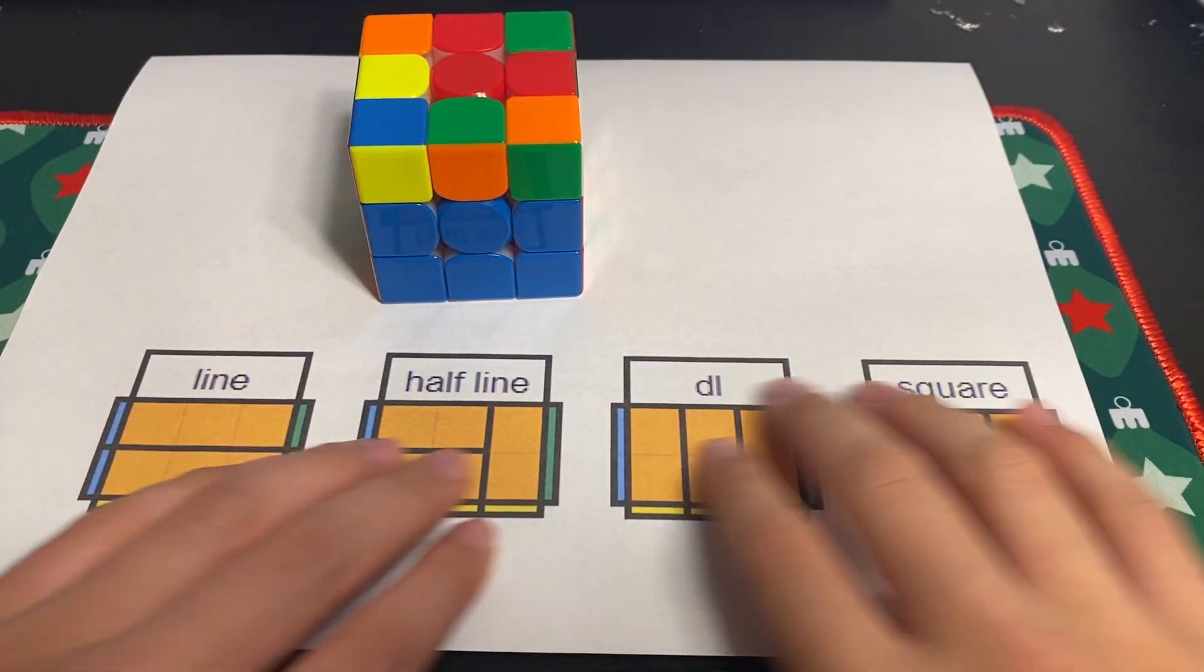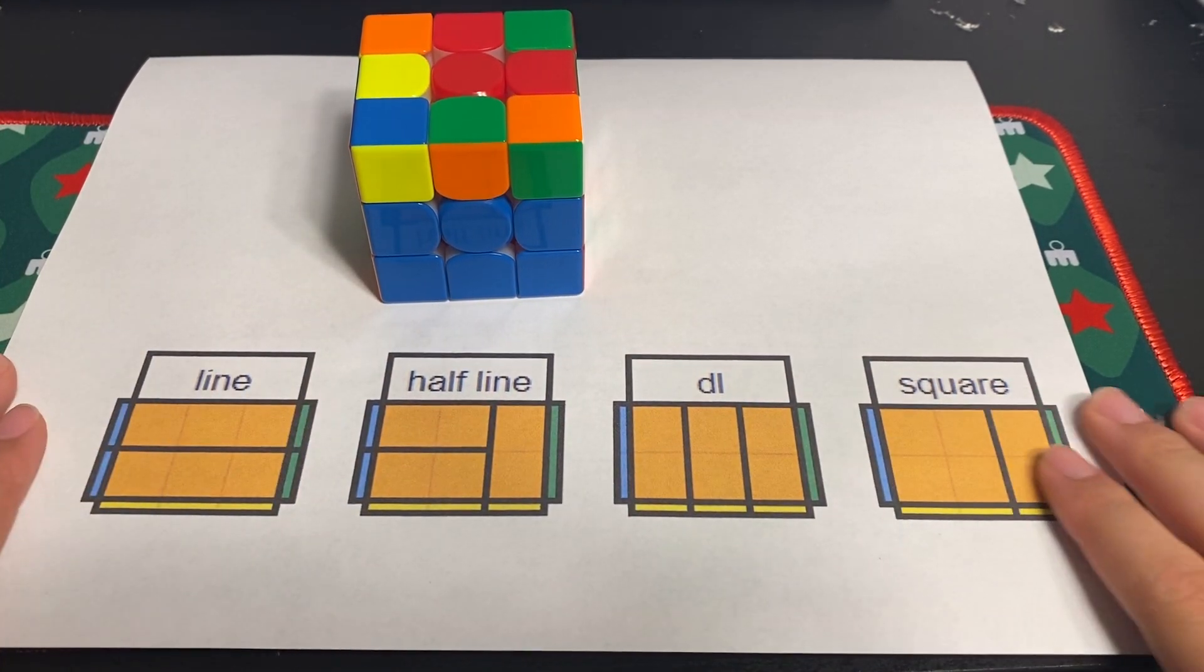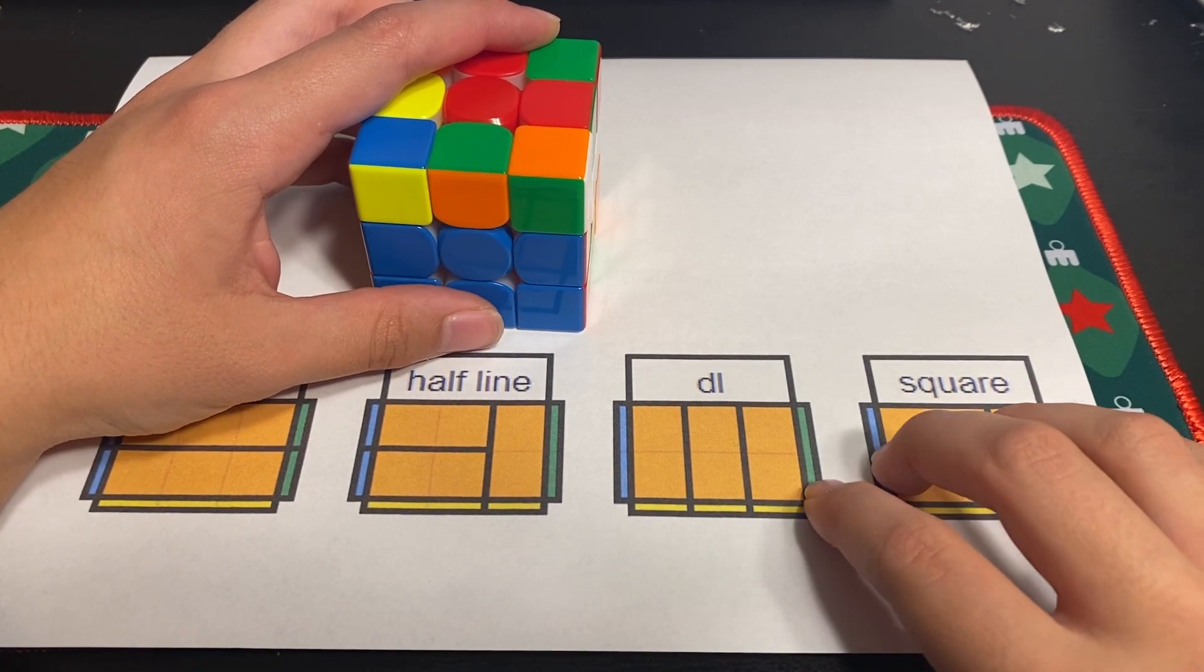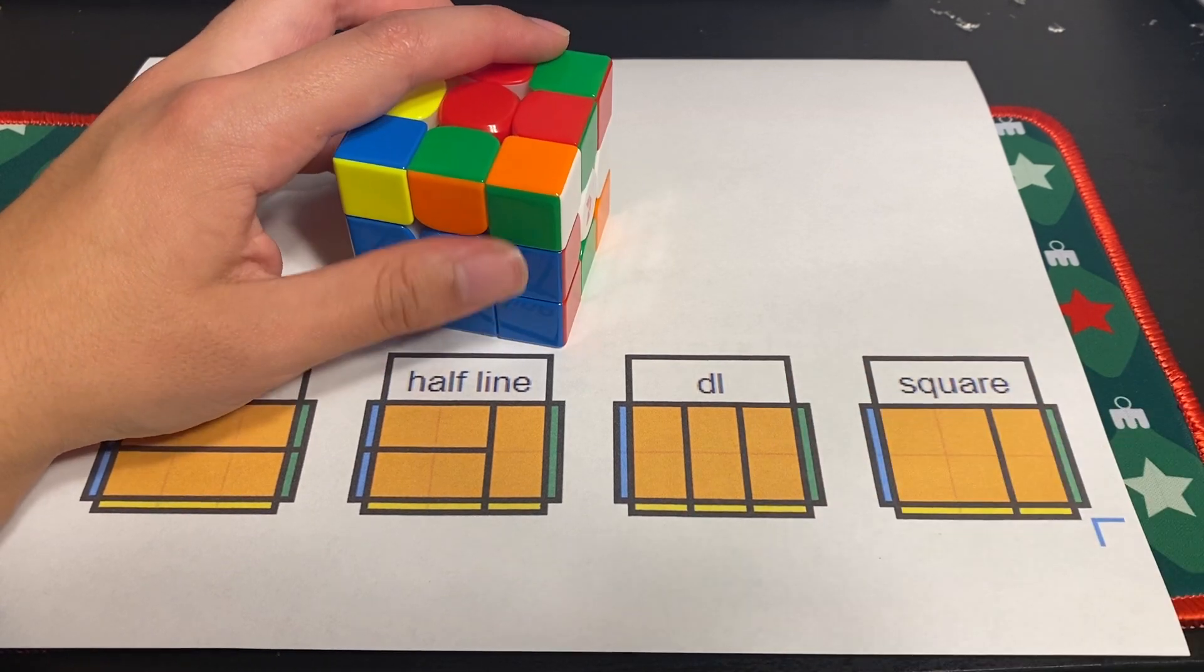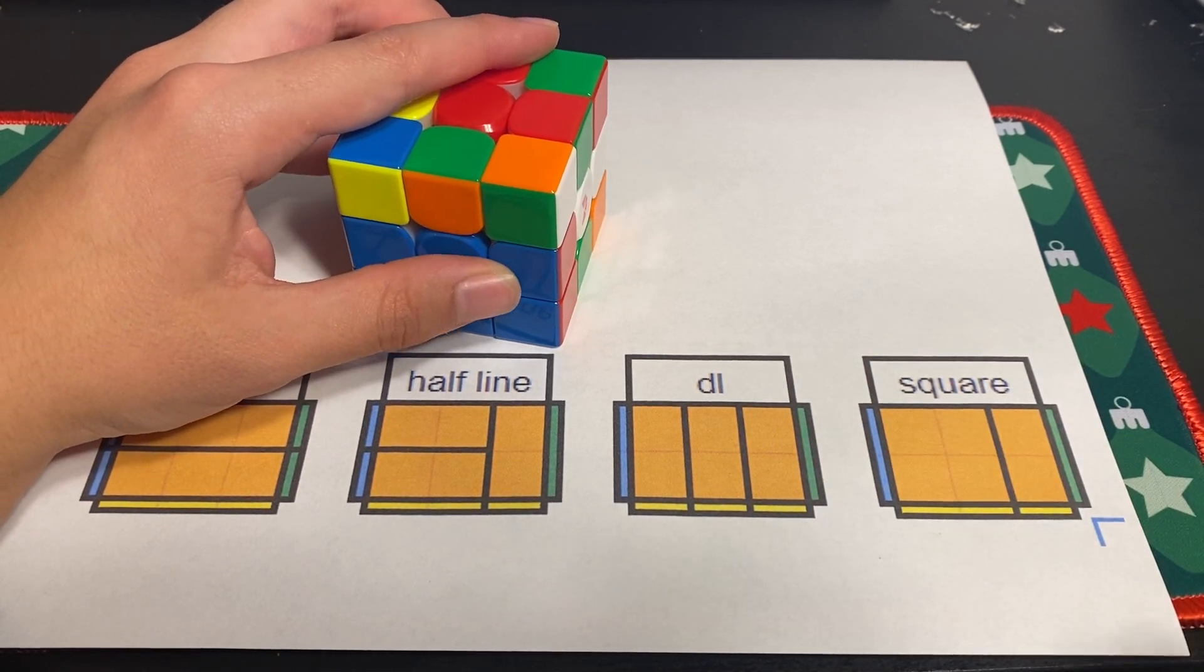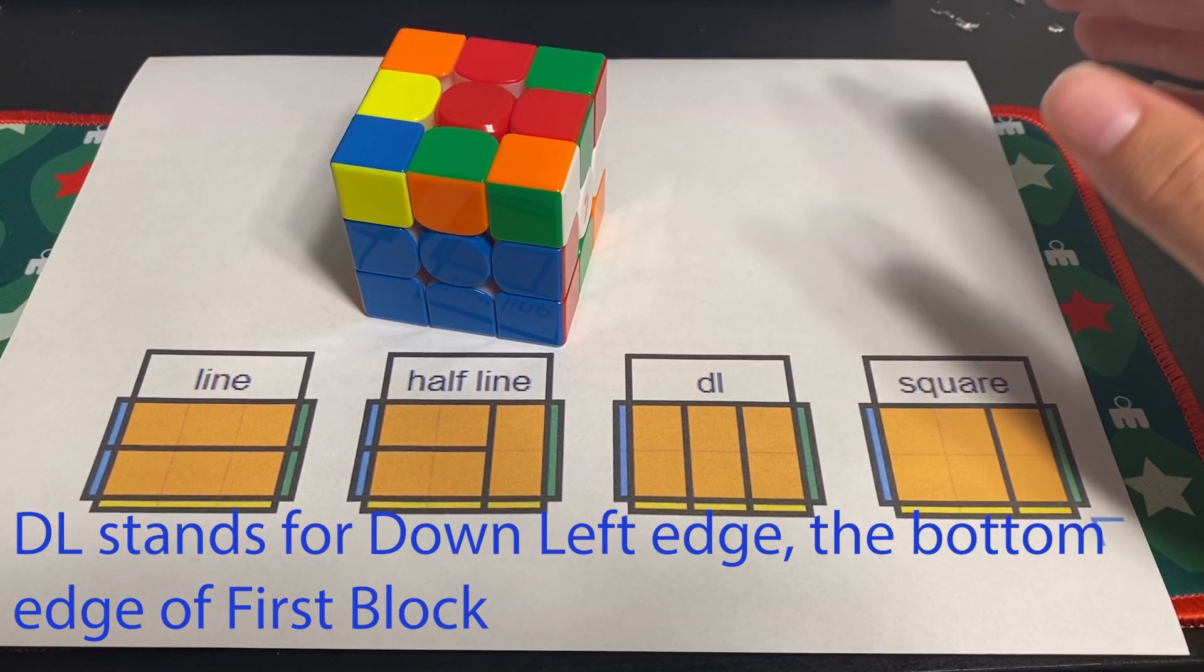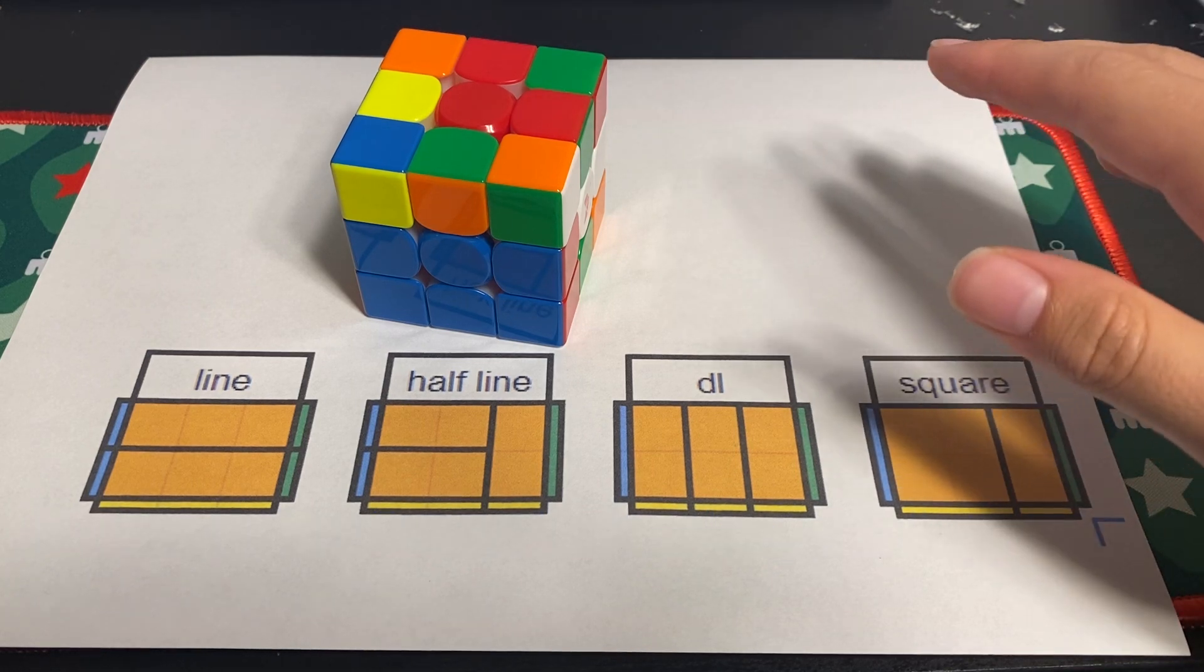What I have here is a drawing of all the different first block building approaches and how they're categorized. We're going to start with DL because you've probably already used DL, especially if you switched to Roux from CFOP, because it's the most similar to F2L.